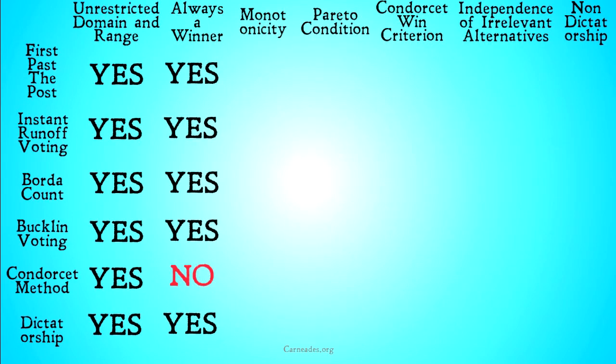So looking at what we have so far, all of our systems passed unrestricted domain and range, and everything but the Condorcet method passed the always a winner criterion.